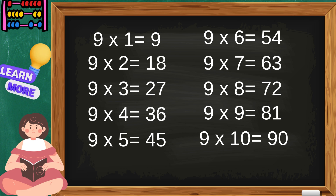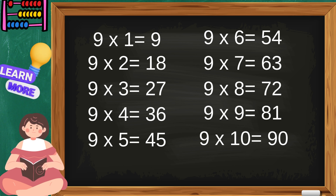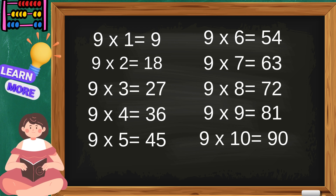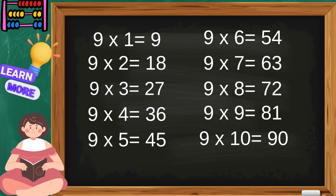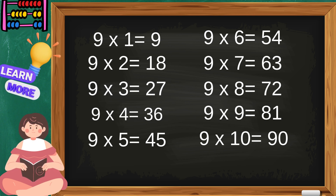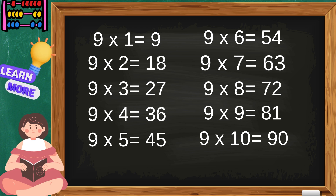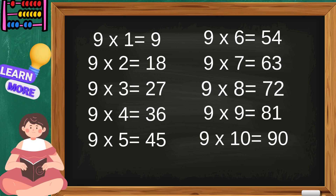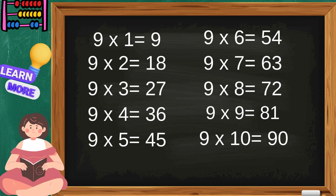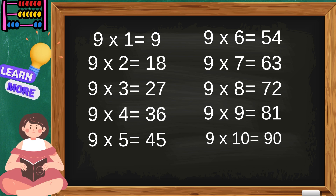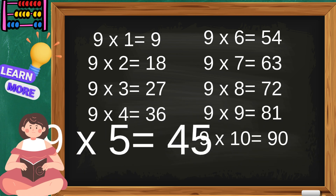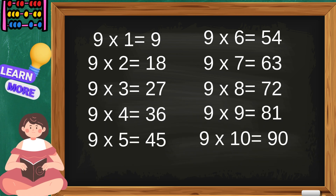Children, it's your turn now. Sing along. Nine ones are nine, nine twos are eighteen, nine threes are twenty-seven, nine fours are thirty-six, nine fives are forty-five, nine sixes are fifty-four, nine sevens are sixty-three, nine eights are seventy-two, nine nines are eighty-one, nine tens are ninety. That was the table of nine.